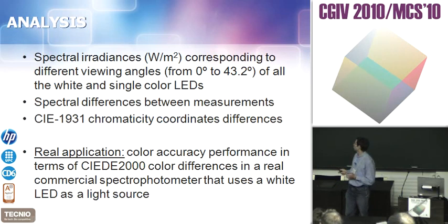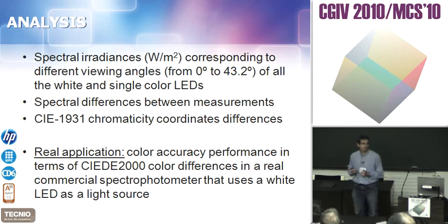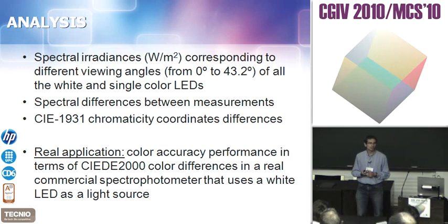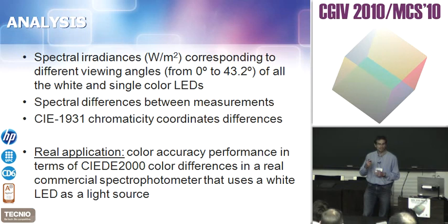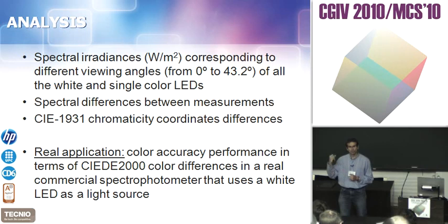Which analyses did we perform? First, we measured the radiance — watts per square meter — at all viewing angles from 0 to 43.2 degrees, for all white and color LEDs. Then we calculated the spectral differences of all measurements, and also the chromaticity coordinate differences for the white LEDs. Finally, since spectrophotometers using white LEDs as light sources have appeared on the market in the last four years, we analyzed one such device to see if what we found with light sources also affects real spectrophotometers you can buy.